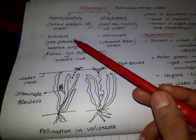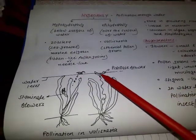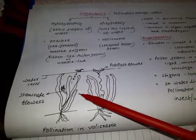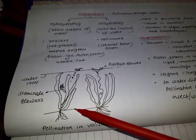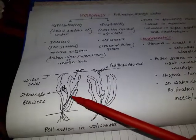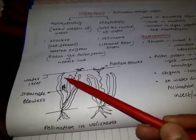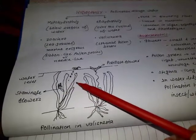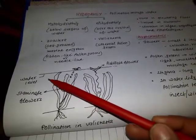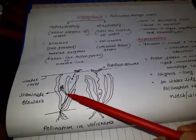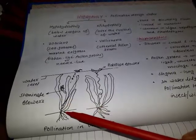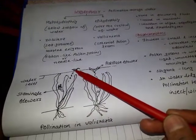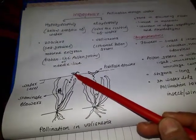In Zostera, both male flowers and pollen grains remain below the surface of the water because they have the same specific gravity as water, so they remain submerged and do not rise to the surface.